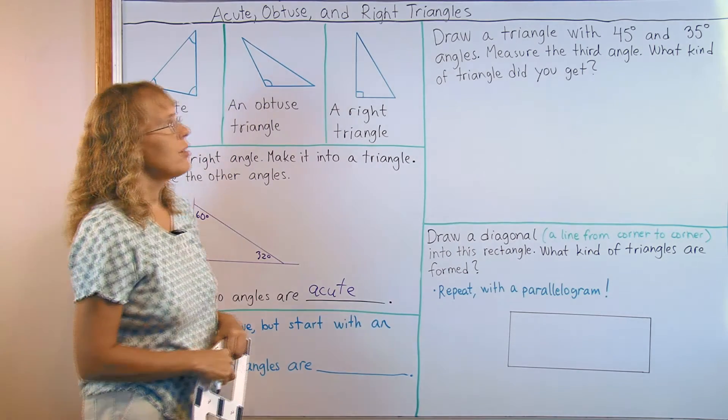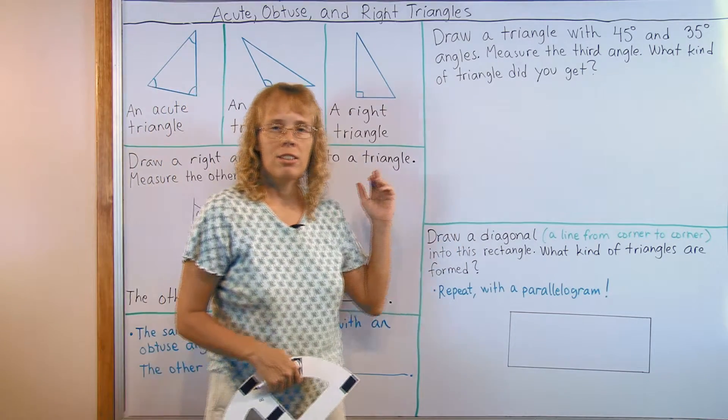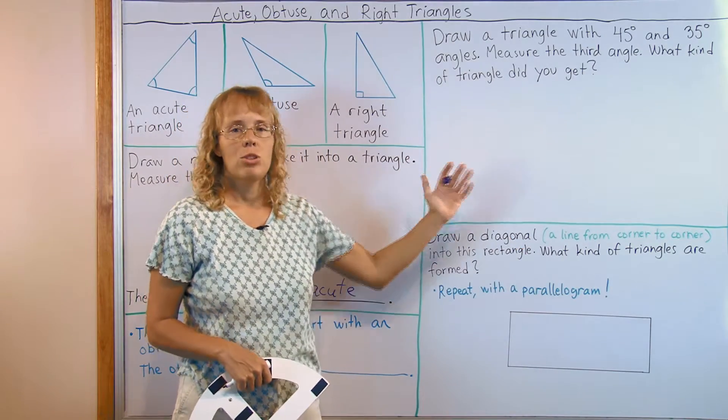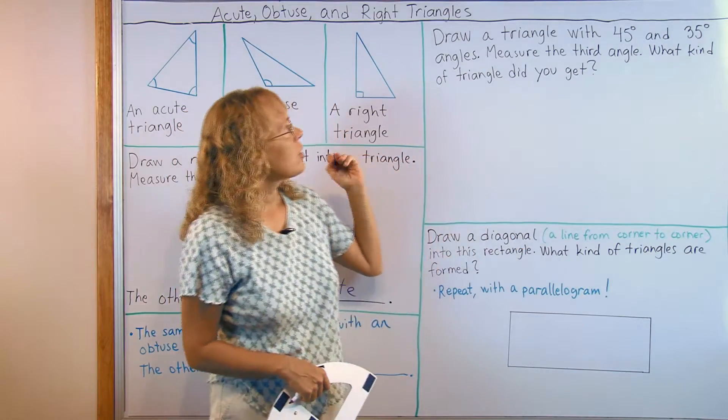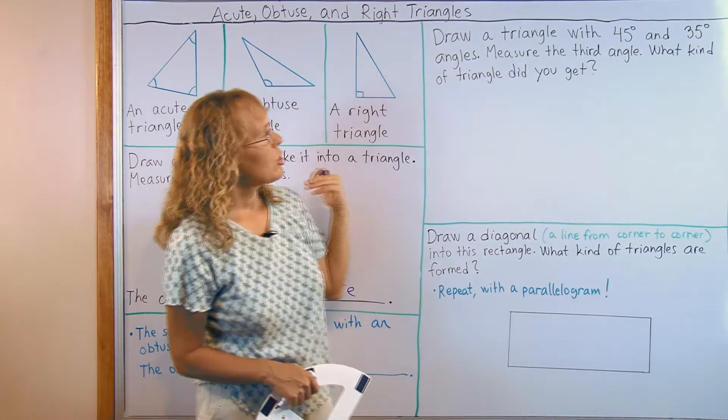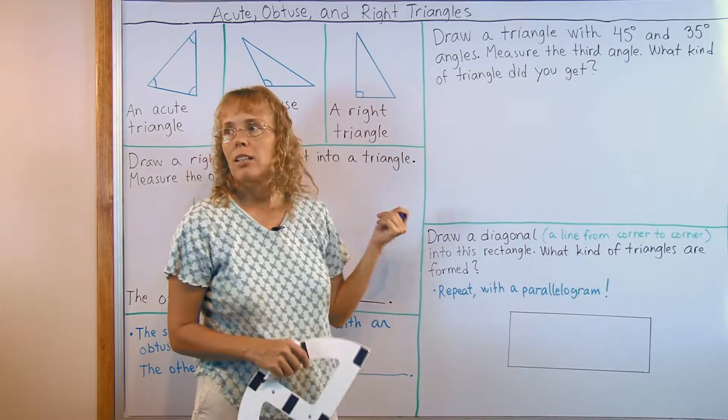And here we have another kind of exercise on the similar lines. It gives us two angles and then we need to check what kind of triangle we get. Draw a triangle with 45 degree and 35 degree angles, then measure the third angle. What kind of triangle did you get?